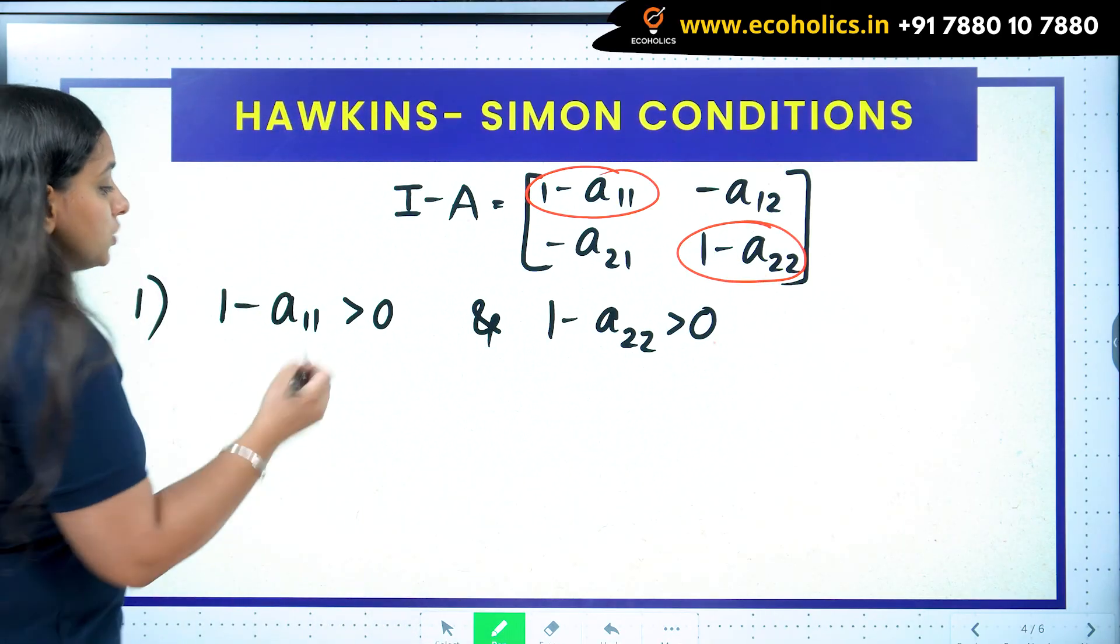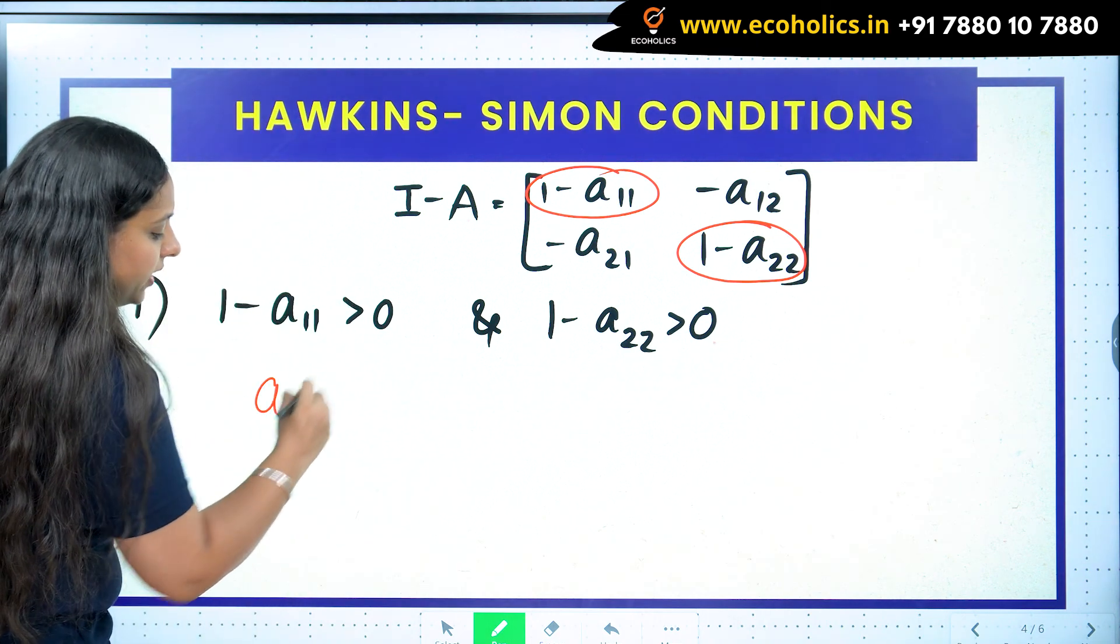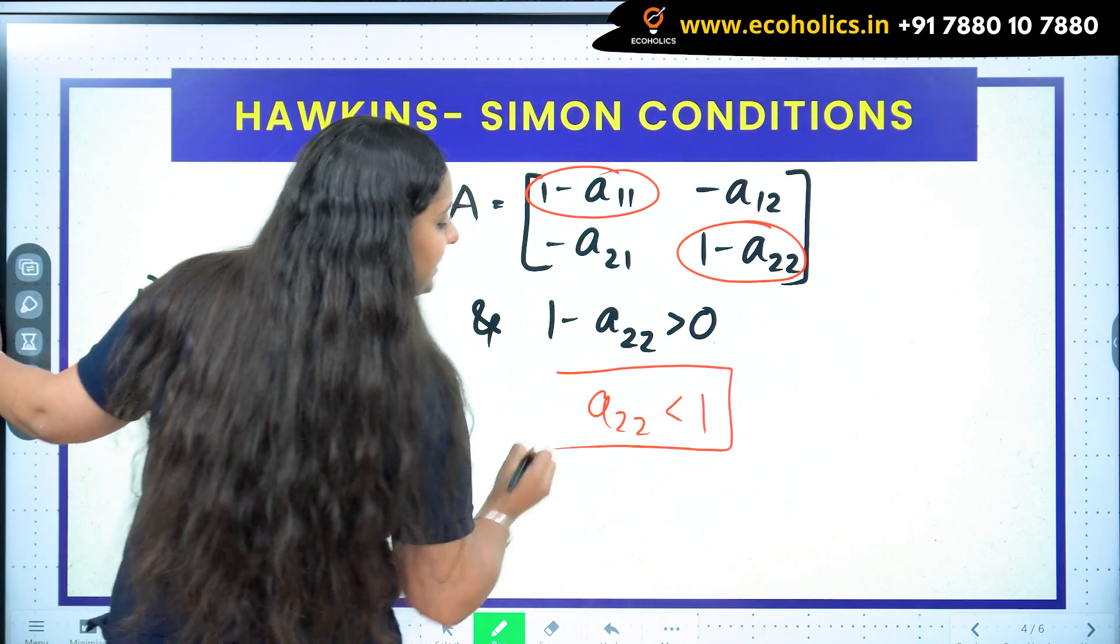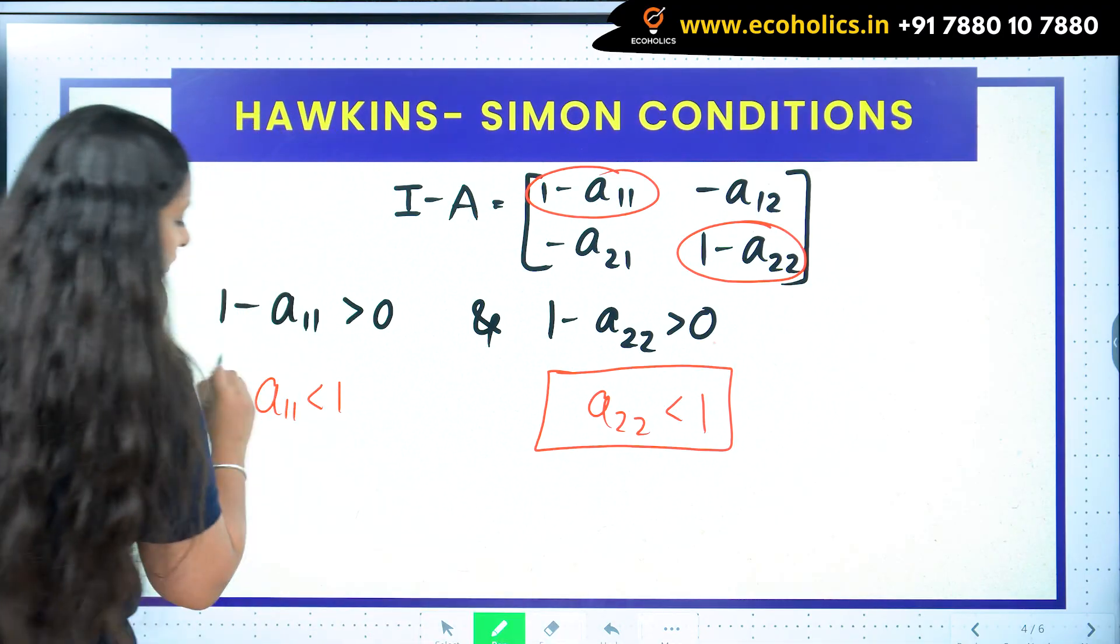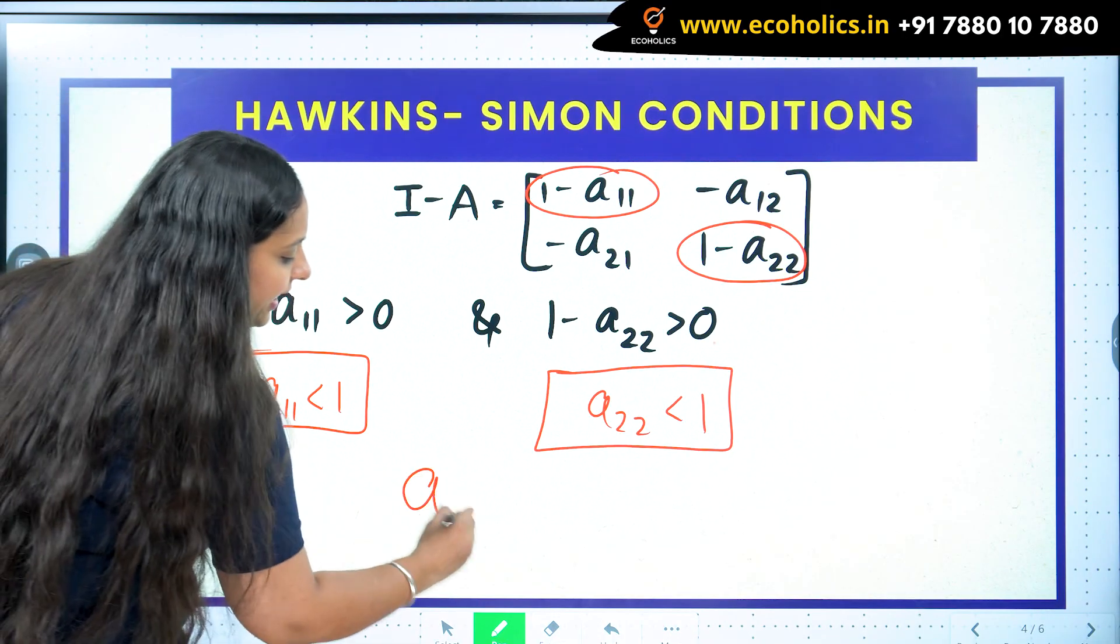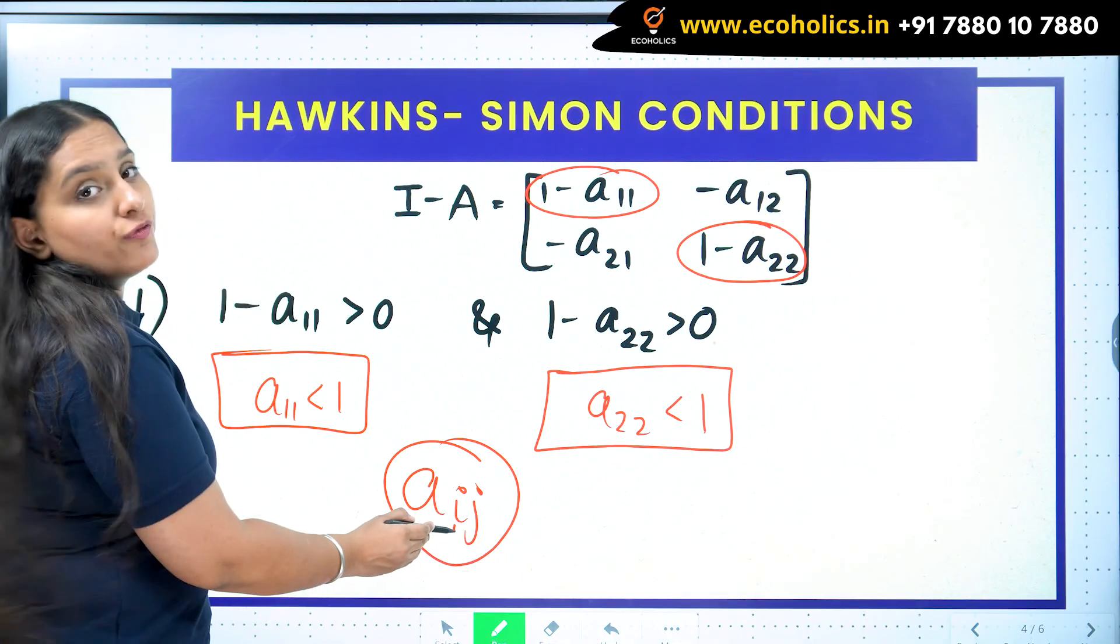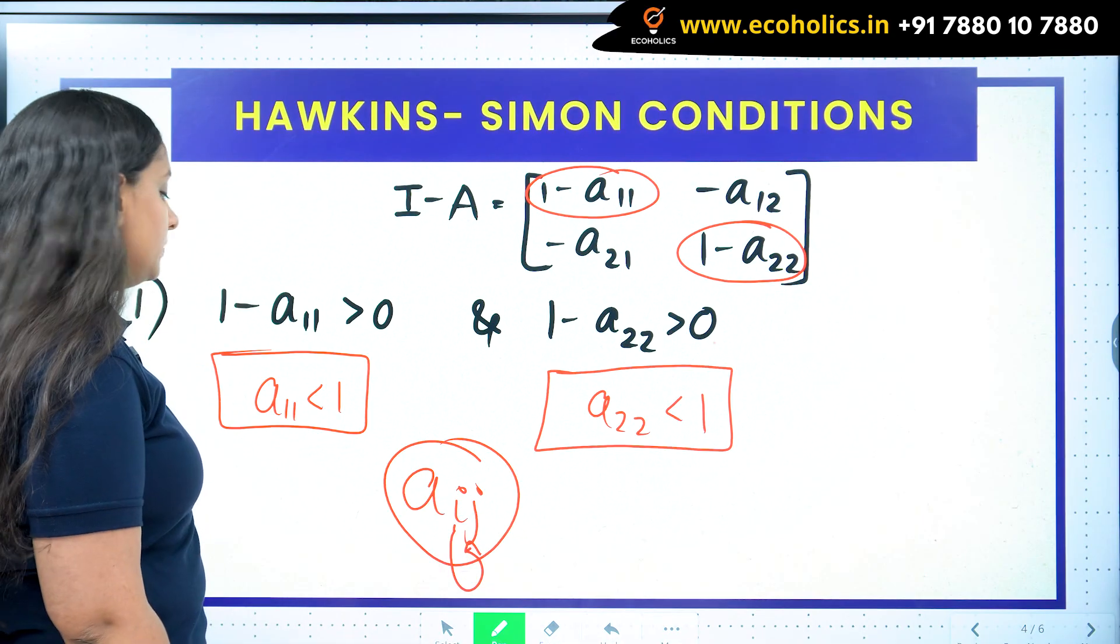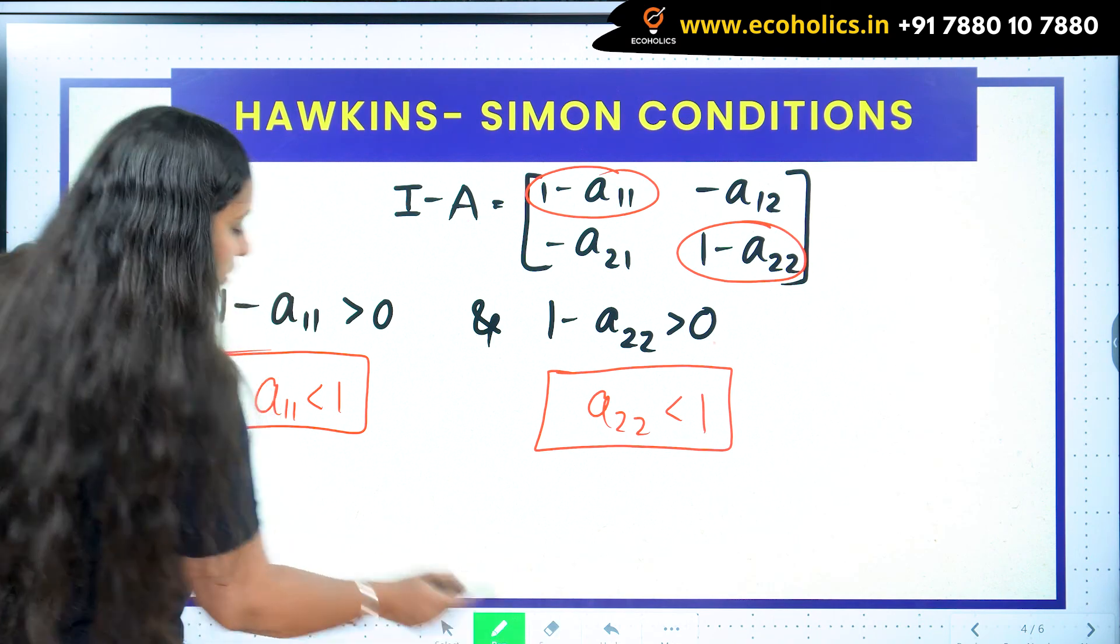The first condition says that the diagonal elements of your I minus A matrix should be positive. So if I'm writing this as positive, I would get a_11 less than 1 and a_22 less than 1. Now what is the implication? What do we understand with a_11 or a_22? When I say a_ij, it tells us how much units of output of ith industry are used by jth industry as raw material.